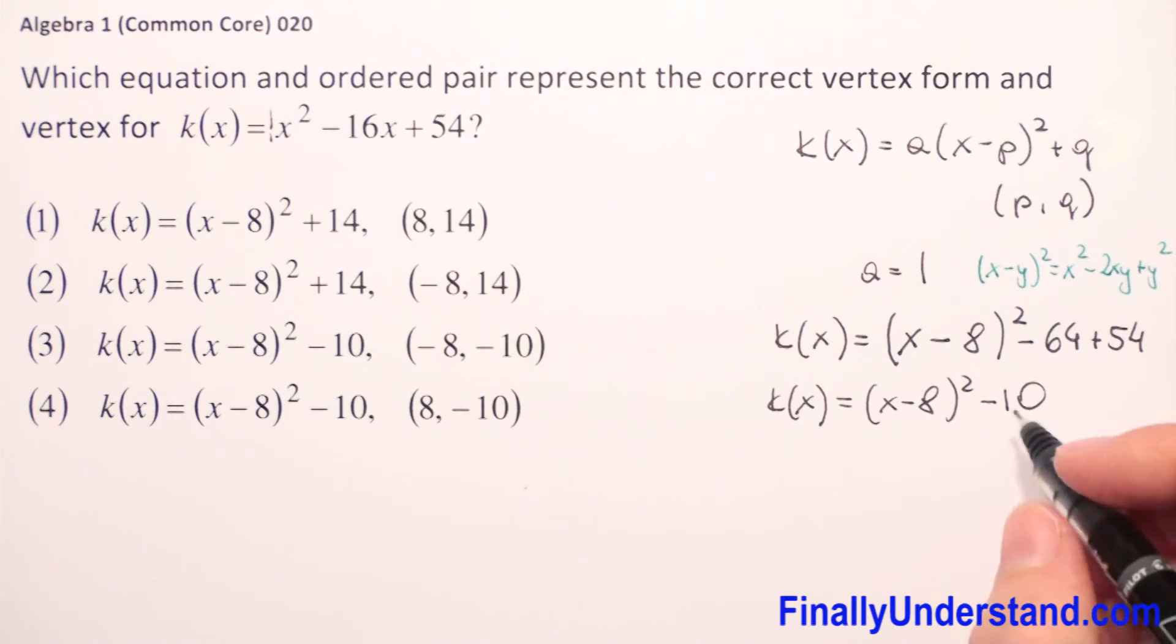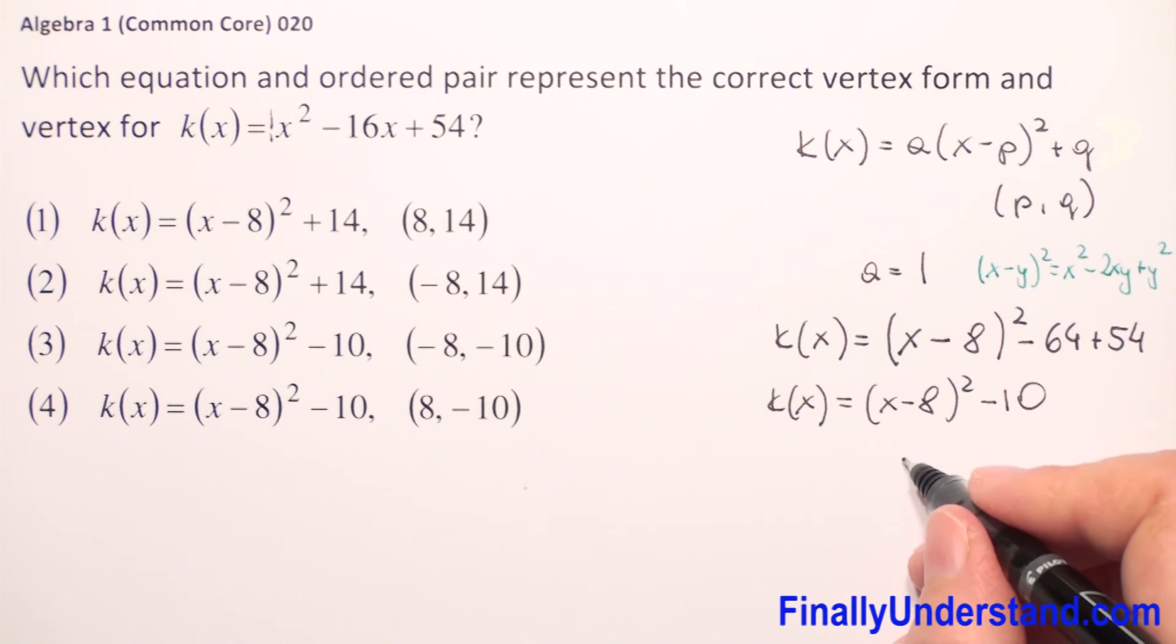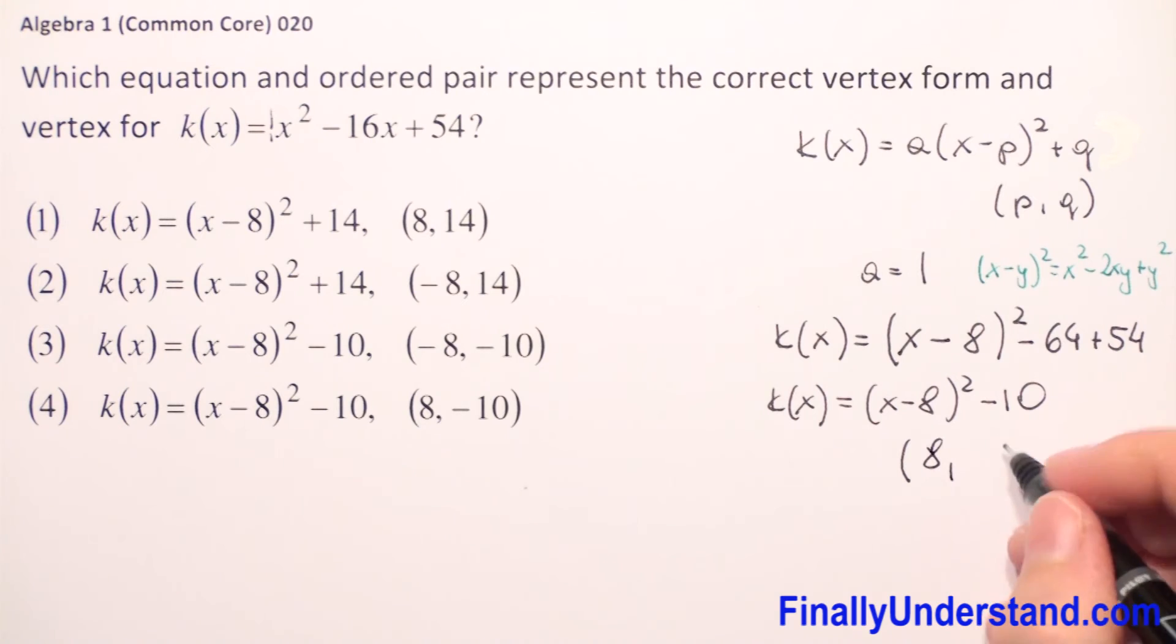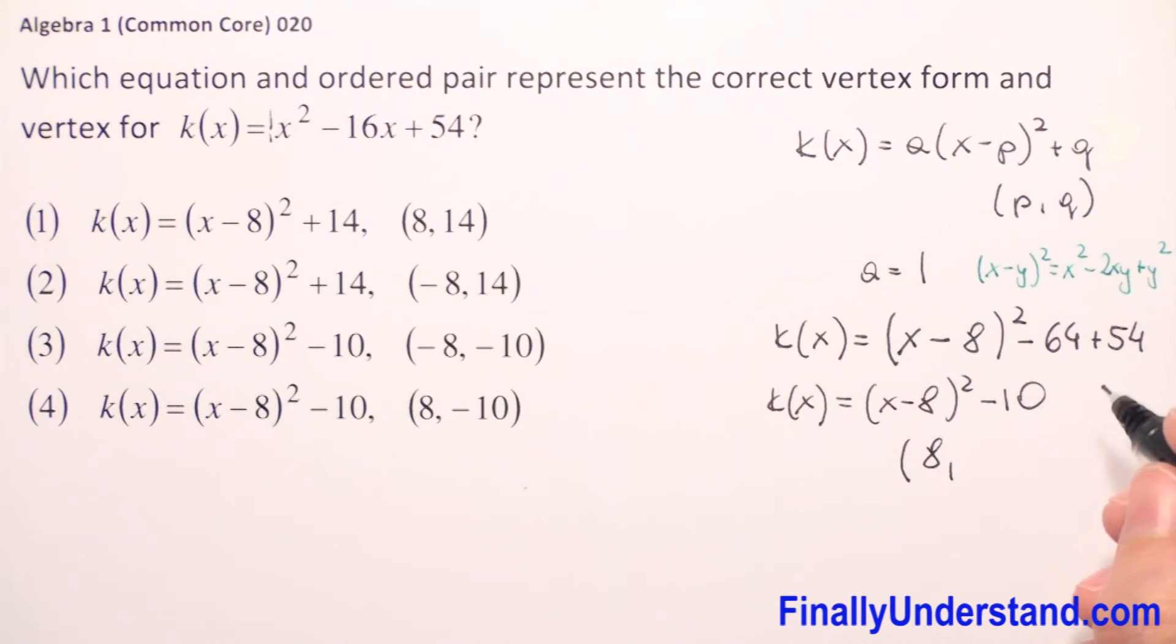From this form, we can read the coordinates of the vertex. Whatever we subtract from x, this is our first coordinate. So it will be 8. And what else? We have negative 10.